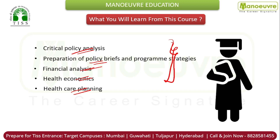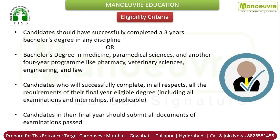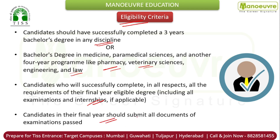Now let's check out the eligibility criteria. Candidates should have successfully completed a three-year bachelor's degree in any discipline, or a bachelor's degree in medicine, pharma, or medical sciences, or any other four-year program like pharmacy, veterinary sciences, engineering, and law. Candidates who will successfully complete all the requirements of the final year — including examinations and internships if applicable — and candidates in their final year should submit all the documents of the examination pass.